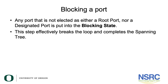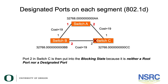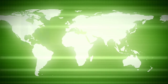The fourth and final step: any port that is not elected as either a root port or a designated port is put into the blocking state. This breaks the loop and completes the spanning tree. In our diagram, all ports on Switch A are designated ports; Port 1 of Switch B and Port 1 of Switch C are root ports; and Port 2 of Switch C is neither a root port nor a designated port, so it is placed in the blocking state.